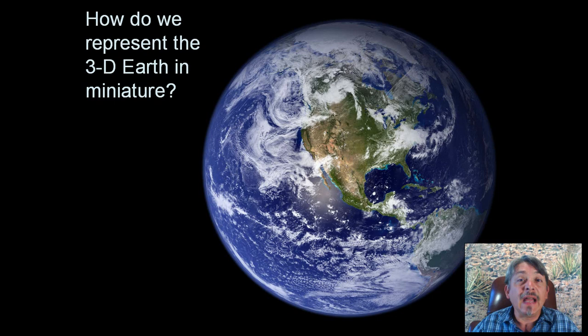Behold the planet Earth — what it really looks like, with clear colors and lots of ocean and land. But notice how much of it is obscured by clouds in its sky. How do we represent the three-dimensional Earth in miniature?